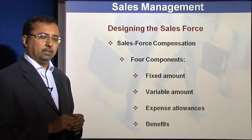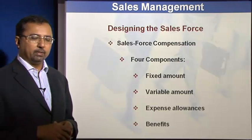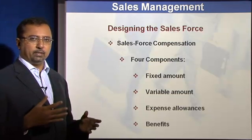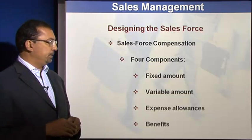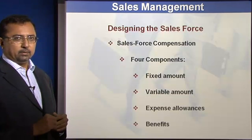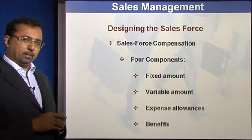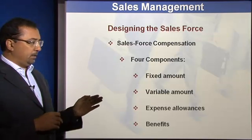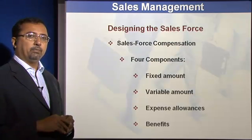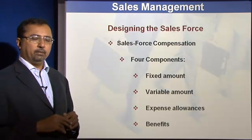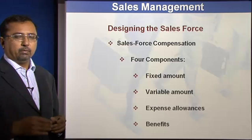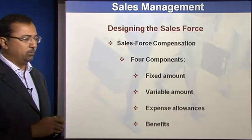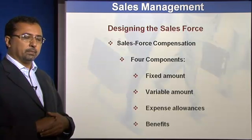A big aspect is how to compensate sales people, as many believe sales people are a different breed compared to others in a company. There are typically four components: first, a fixed salary component; second, a variable amount which is performance-based on sales, collections, or sometimes profit; third, expense allowances for travel and customer entertainment; and fourth, other benefits such as annual conferences or junkets, as well as terminal benefits that other employees may also be eligible for.